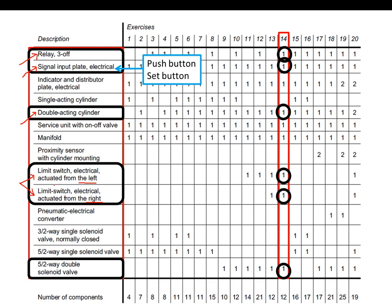We also need to use a 5/2-way directional control valve (DCV). It must be 5/2-way because we are using a double acting cylinder, which can only be controlled by a 5/2-way valve. Bear in mind that it has a double solenoid — not spring return — making it a memory valve.